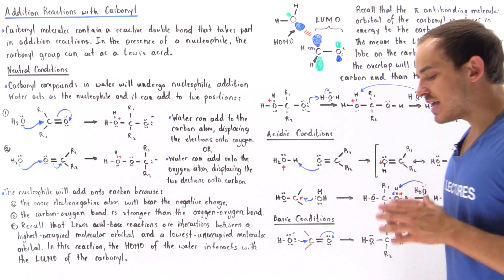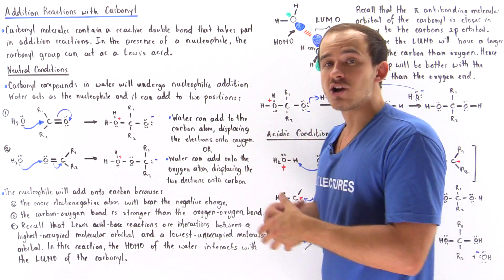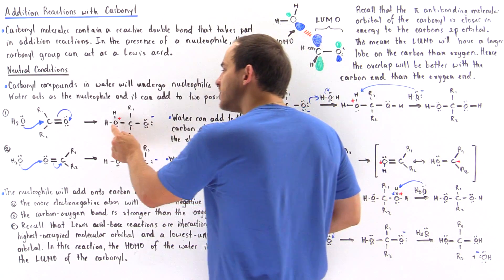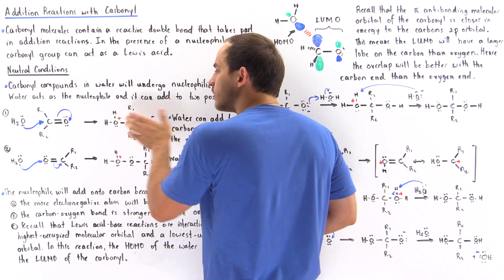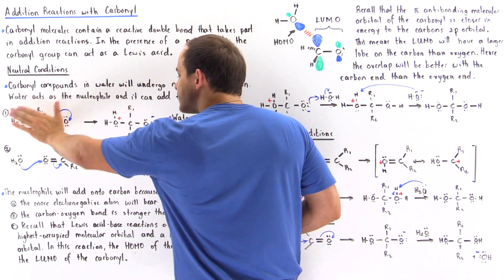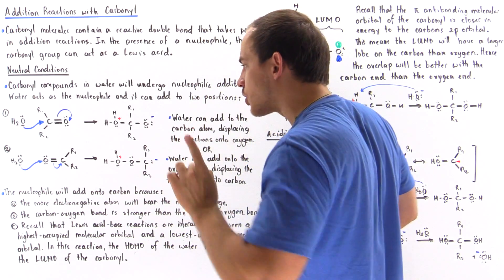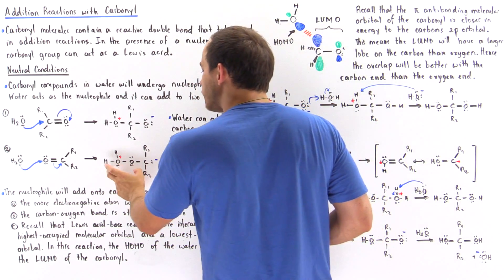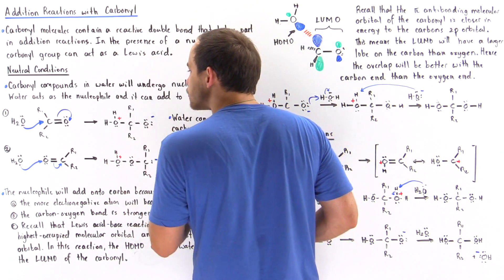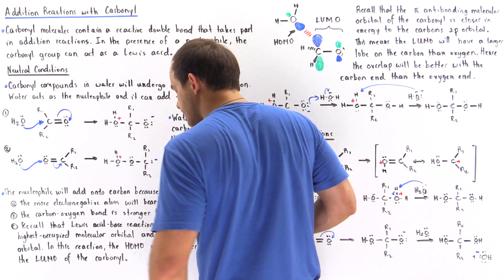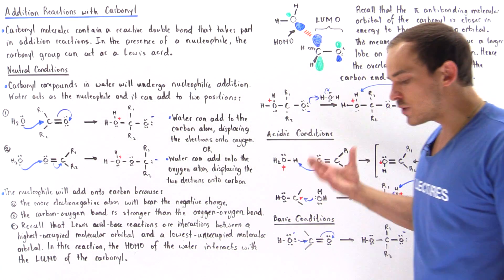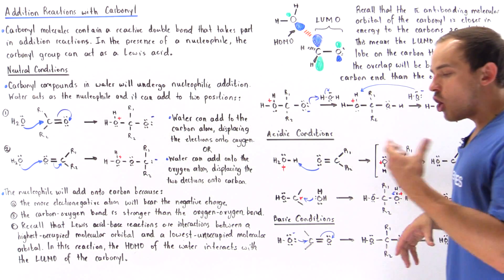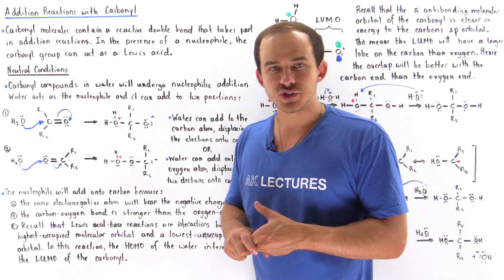The second reason has to do with the bonds that are formed. The carbon-oxygen bond formed in pathway one is stronger than the bond formed between the two oxygens in pathway two. The third reason has to do with HOMO-LUMO interactions.